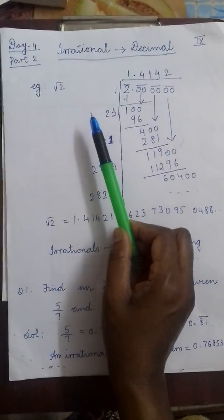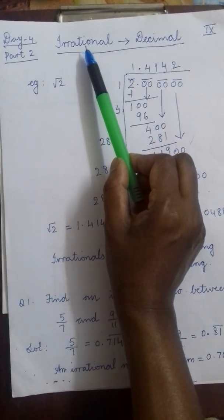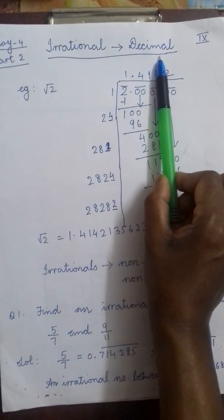Dear students, through this video, I would like to explain how we can represent an irrational number in decimal form.